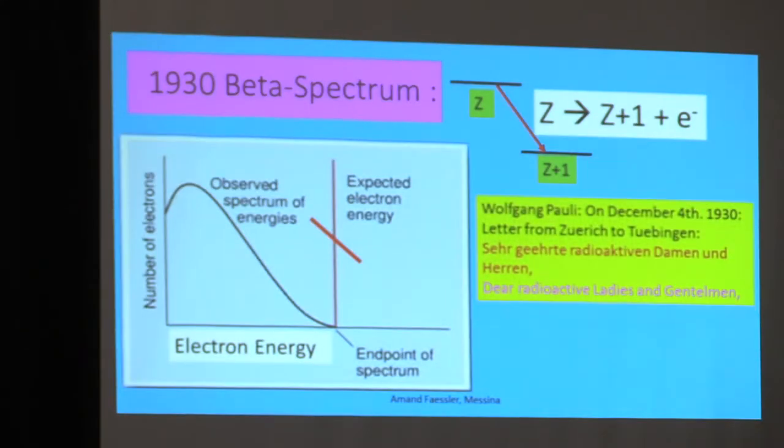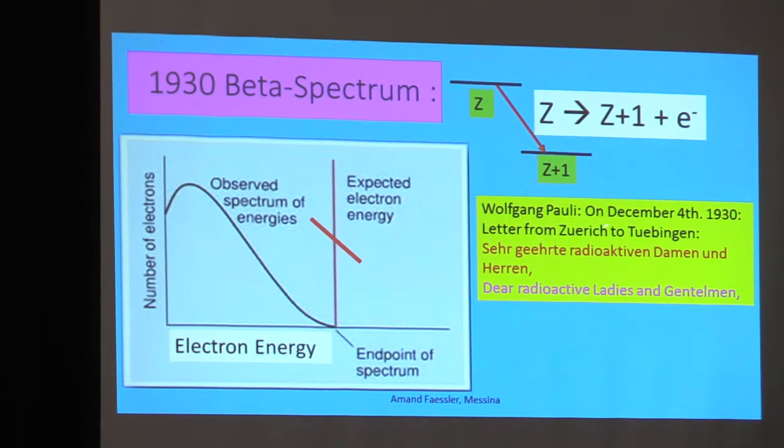Wolfgang Pauli with his famous letter which he wrote on the 4th of December 1930 from Zürich, where he was professor, to Tübingen, my university, where there was a little meeting about radioactivity. It started with 'sehr geehrte radioaktive Damen und Herren' - Dear radioactive ladies and gentlemen. His solution to the problem was that there is an additional particle, he called it neutron at that time, because the neutron from Chadwick was not yet detected.